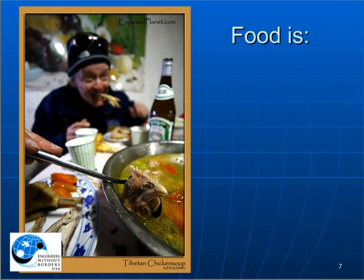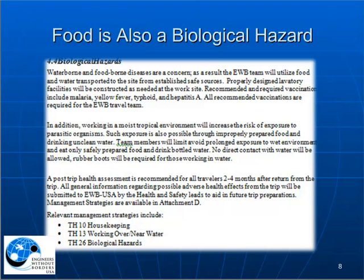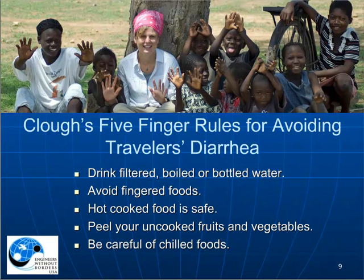Nearly half of travelers get diarrhea, but avoiding local food is not the answer. Food is the currency of hospitality, of business, and it is an art form of which people are deeply proud. But the HASP reminds us that food is also a biological hazard. Avoiding this hazard is a matter of knowing what is safe to eat wherever it is made. Dr. Allison Clough's five-finger rules are a great guideline for how to enjoy food without getting diarrhea.